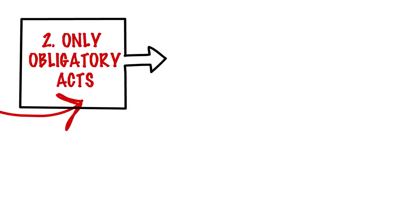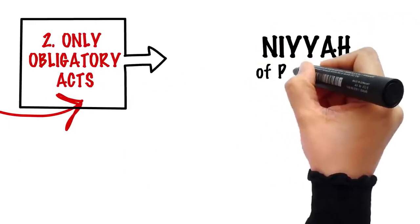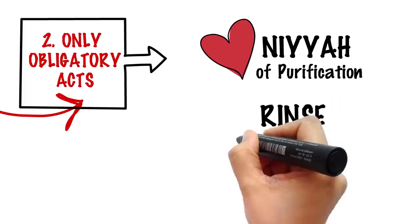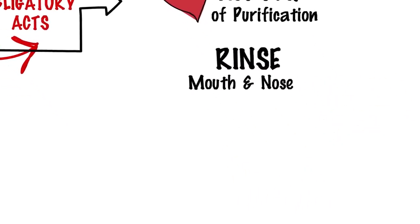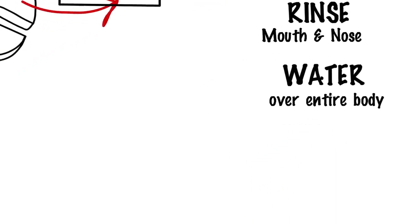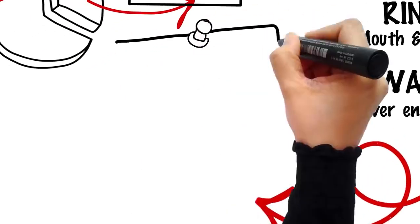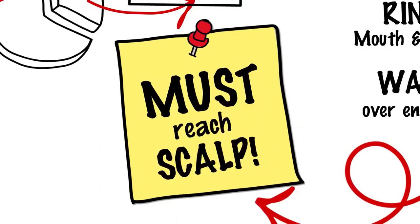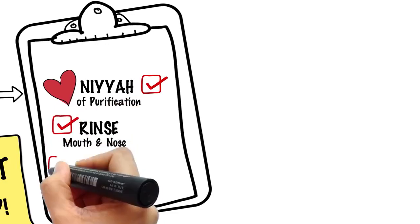So what are these obligatory acts of ghusl? A beforehand niyyah, or intention, that you are taking this bath to purify yourself from the major ritual impurity. Rinsing your mouth and nose, and letting water run over your entire body at least once. Make sure it reaches every part of it, even your scalp under the thick hair.